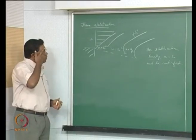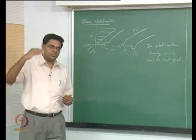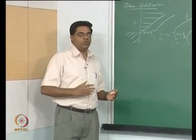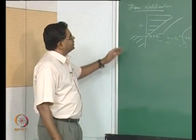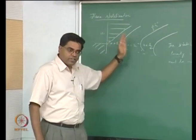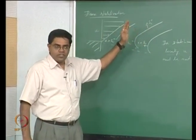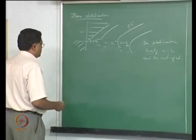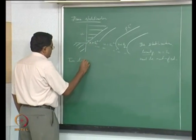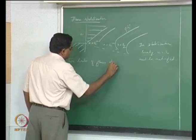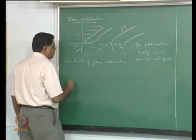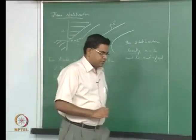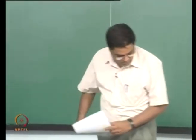The second situation is where we do the opposite: we progressively increase the velocity relative to the flame speed, or progressively decrease the flame speed by going into leaner and leaner mixtures at the same flow velocity. That causes the flame to get established further and further out, and at some point it cannot be stabilized anymore and starts blowing off. So you have two limits of flame stabilization: one is flashback, and the other is blow-off.